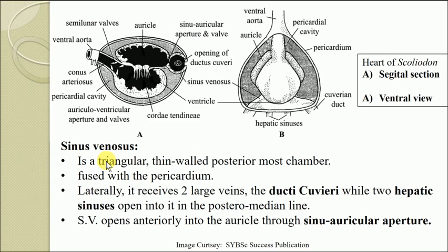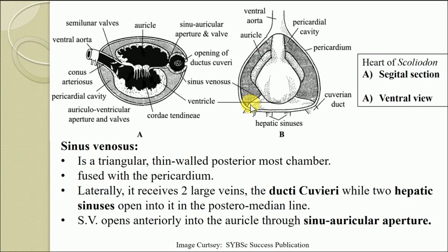The sinus venosus is somewhat triangular and thin-walled, and it is the posteriormost chamber. It is located at the posterior most part of the heart and extends transversely, lying at the base of the pericardial cavity. Here you can see the pericardium enclosing the pericardial cavity, and towards the posterior end is the first chamber of the heart, the sinus venosus.